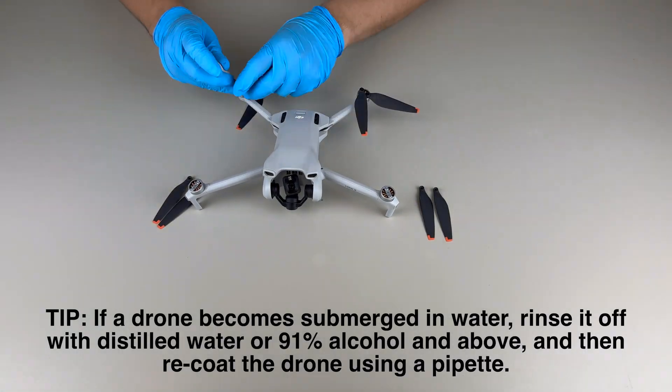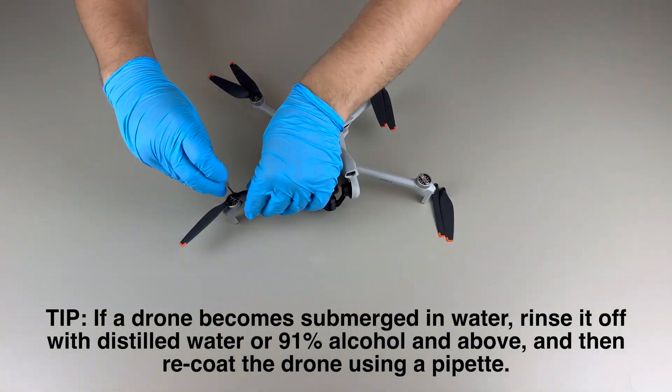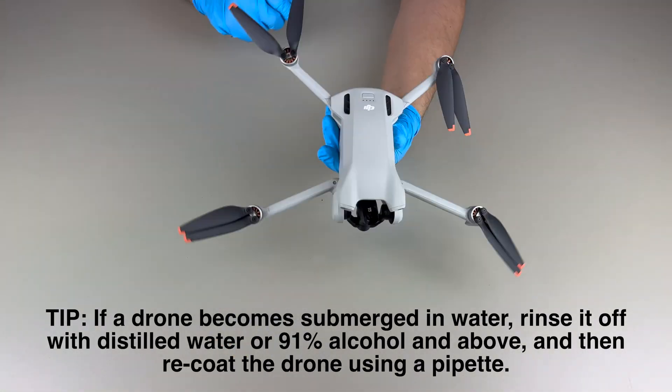If a drone becomes submerged in water, rinse it off with distilled water or 91% alcohol and above, and then re-coat the drone using a pipette.